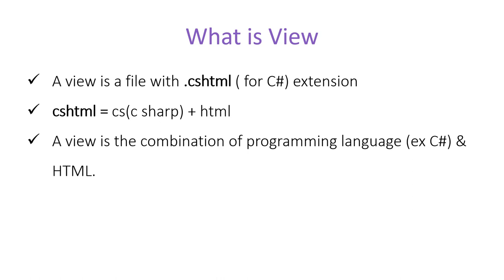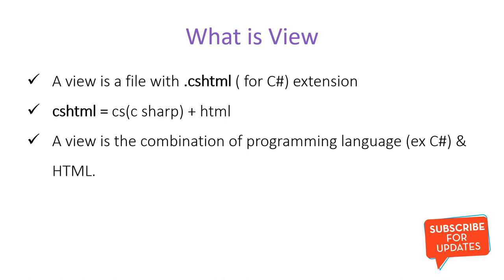Suppose instead of C# you are using VB for development of an ASP.NET Core MVC application. Then the extension of the view file will be .vbhtml, not .cshtml. So basically these extensions depend on the programming language you are using. One thing is clear: a view is only a file with this extension and it has code of C# and HTML.